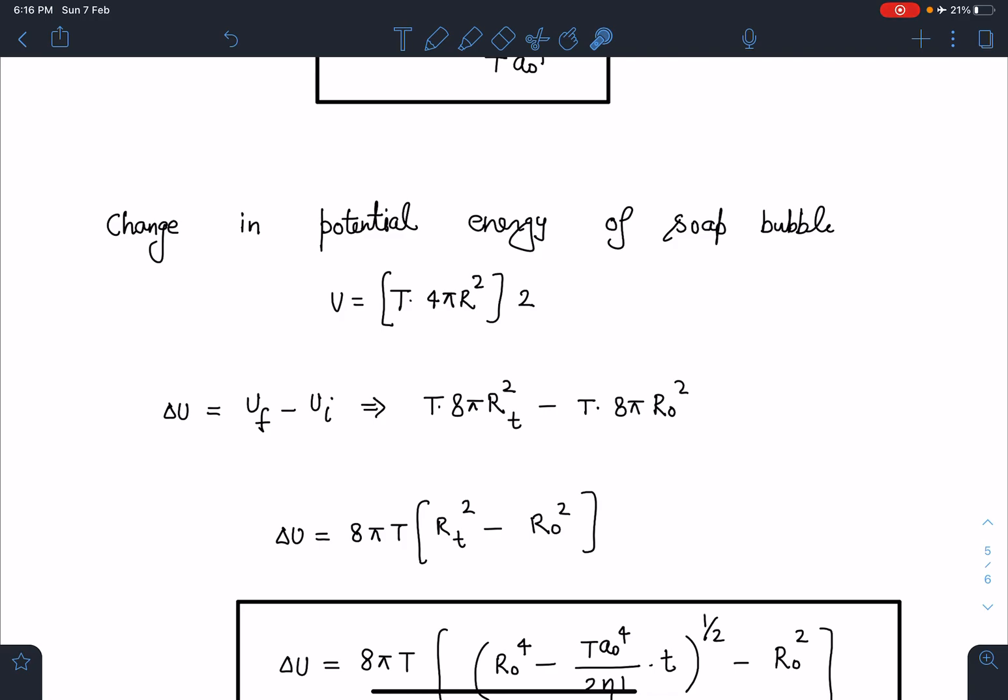Now change in potential energy, it's very easy to calculate. Potential energy of the soap bubble I can write as T × area. There are two layers in the soap bubble: air-liquid-air.